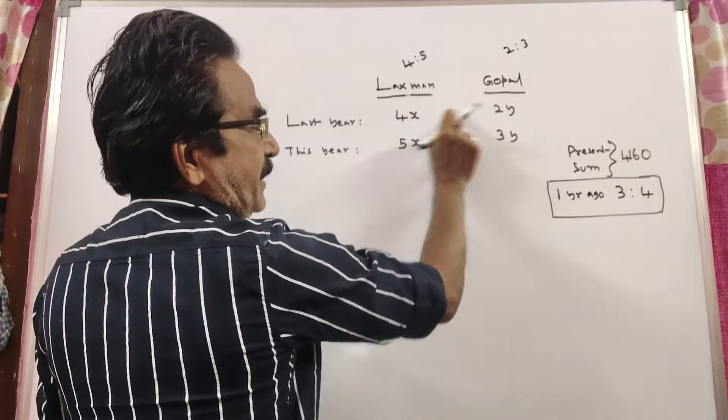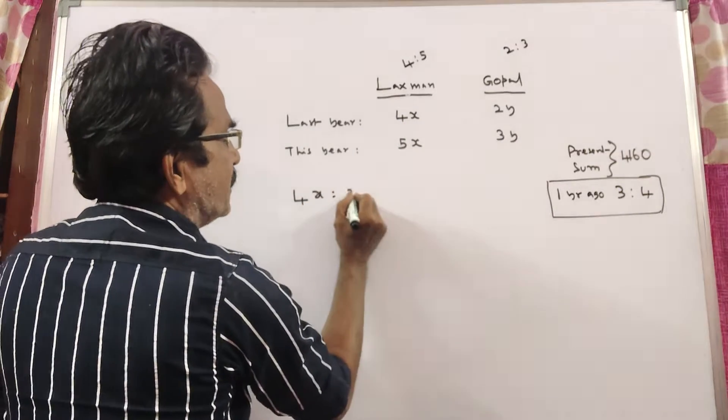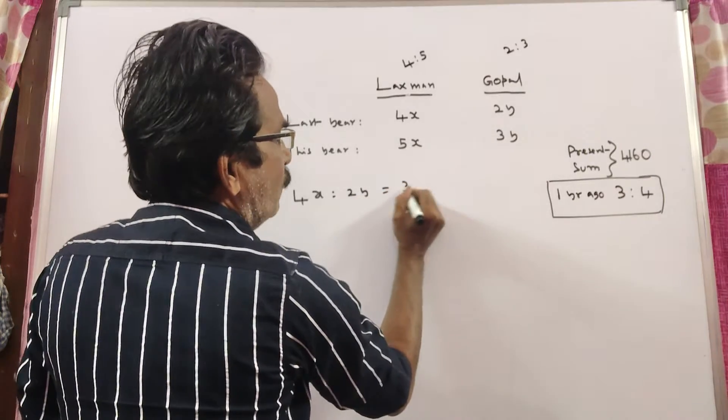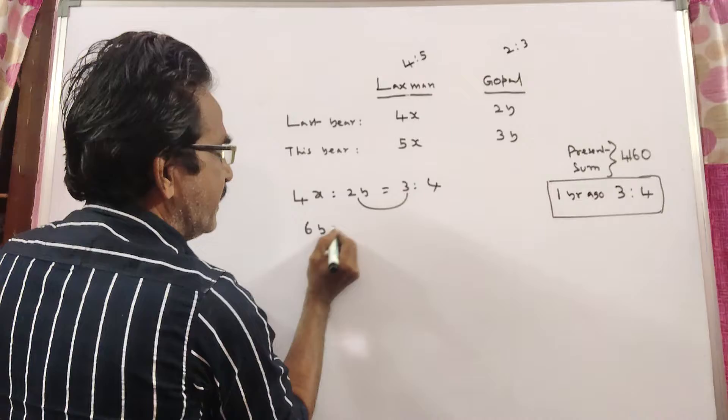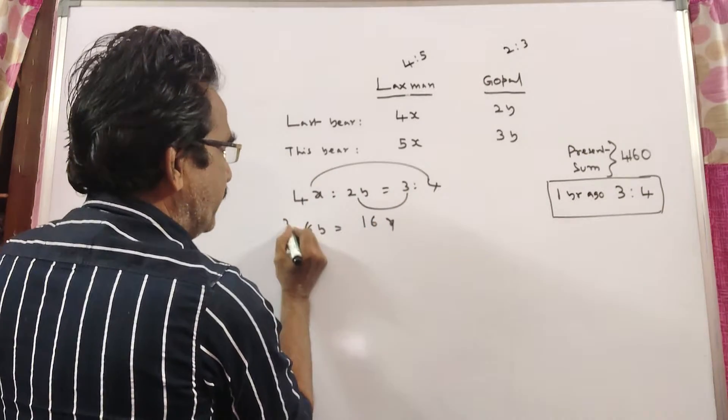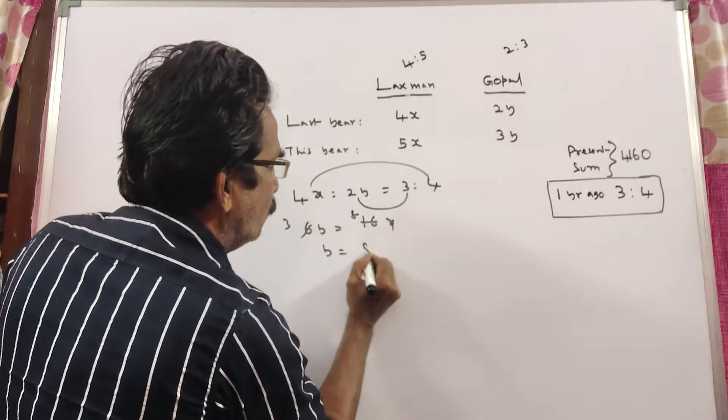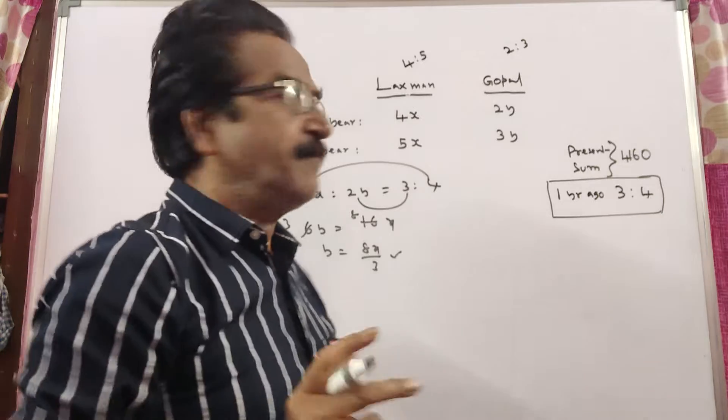the ratio of their last year salaries, the ratio of their last year salaries is equal to 3 is to 4. It implies 6y is equal to 16x to 3 is to 8, y is equal to 8x by 3.